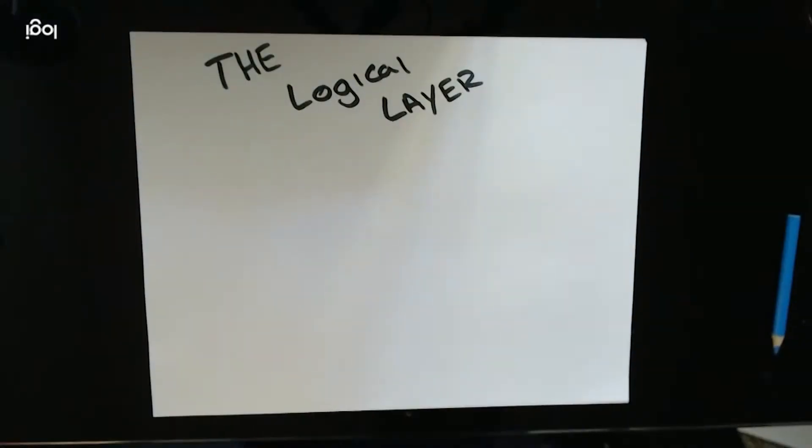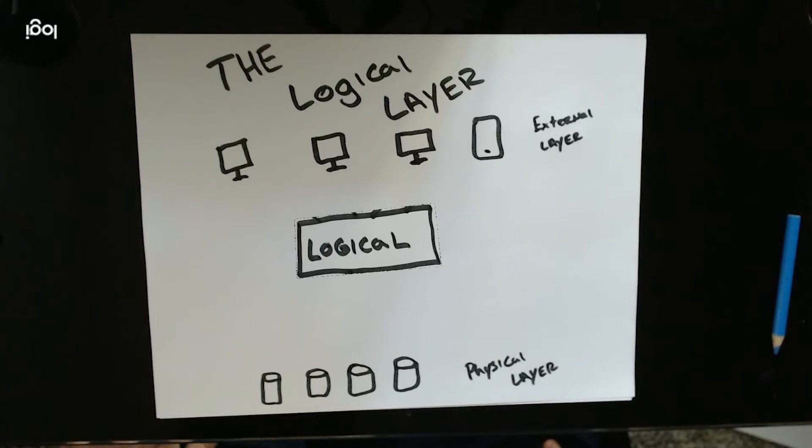The logical layer lies between the user's external layer and the data held within the physical layer. Also known as a schema, a database management system uses the logical layer to destructuralize data extraction to the users.